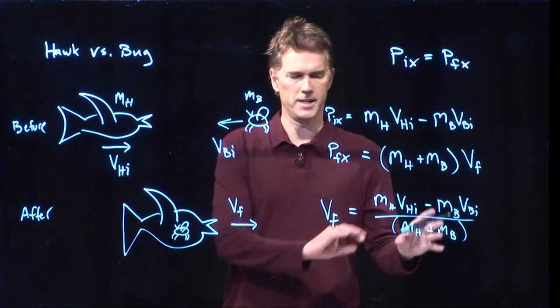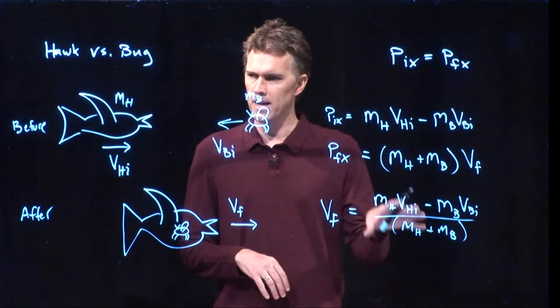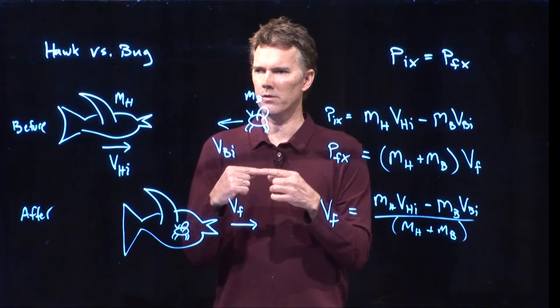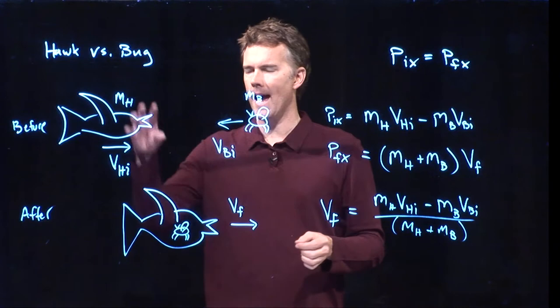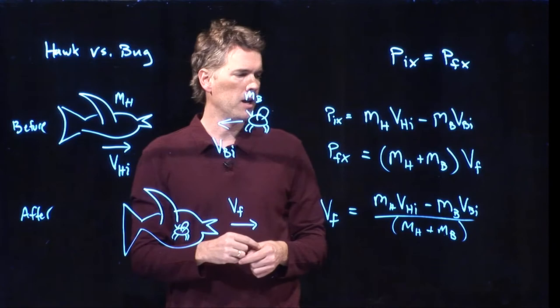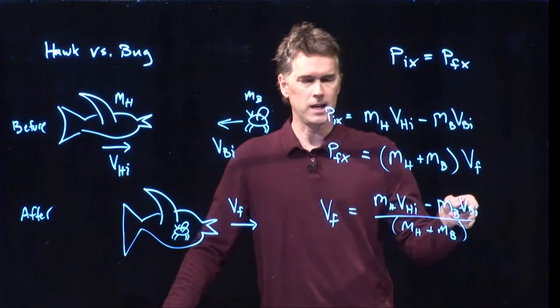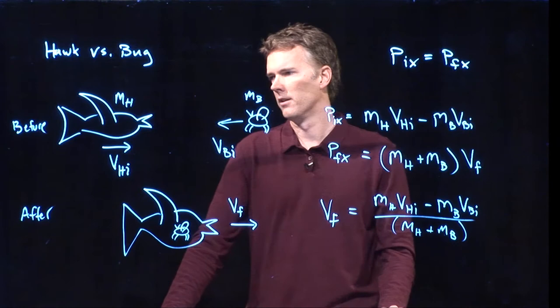And again, it's nice to hang on to the variables just to make sure it makes sense. So a second ago when we talked about the collision between two cars and we wanted the final velocity to be equal to zero, we had the mass of one was equal to the mass of the other and their speeds were equal. If that was the case here, then mass of the hawk would equal the mass of the bug, speed of the hawk would equal the speed of the bug, numerator goes to zero, final velocity is zero.